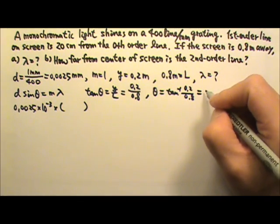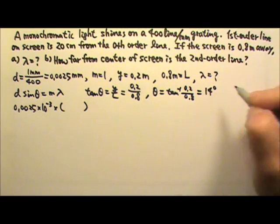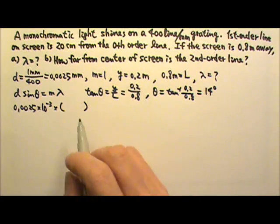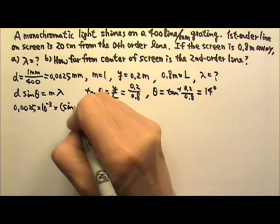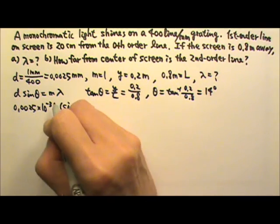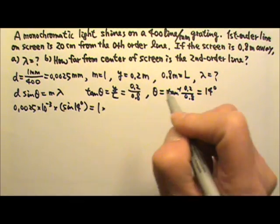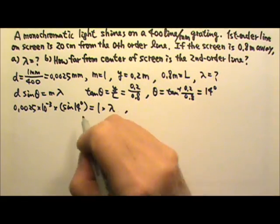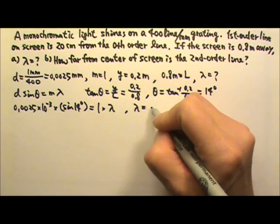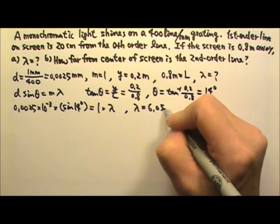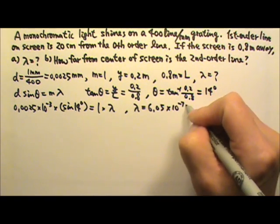And this will give us an angle that is 14 degrees. So I can use the 14 degrees over here. That's sine 14 degrees equals to M equals to 1 times the wavelength. So solving this equation will give us lambda that is 6.05 times 10 to the negative seventh meters.